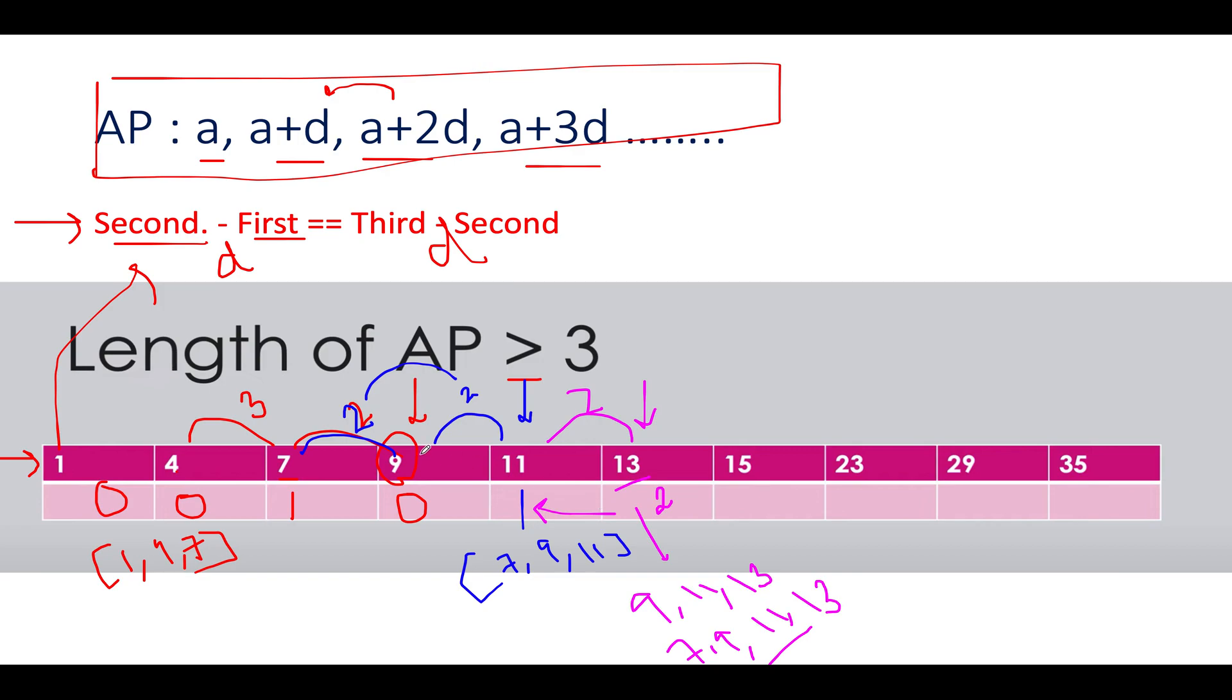The difference between 9 and 11 was already forming an AP progression with difference 2. We got another AP progression containing these three elements [9,11,13] with the same difference. As a result, the total number of possibilities increased to 2. So whatever previous value is stored here, we're going to re-utilize it, add 1 to it, and the answer becomes 2 for this particular case.